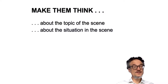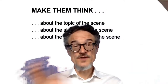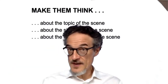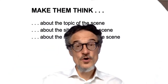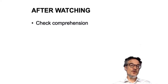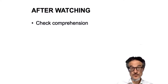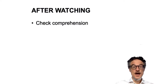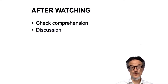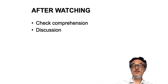So think about the topic of the scene, the situation, and the relationships. For example, if there's a girlfriend and a boyfriend, maybe you want to ask people about their own girlfriend or boyfriend. That's before watching. After watching the movie scene, one thing we need to do is check comprehension — find out if people have understood the scene. Another thing is discussion: we've watched this scene, here's a topic from it, let's discuss what people think about it.